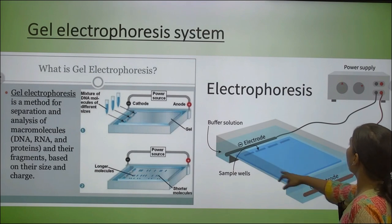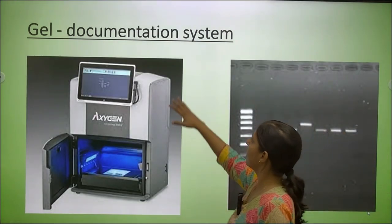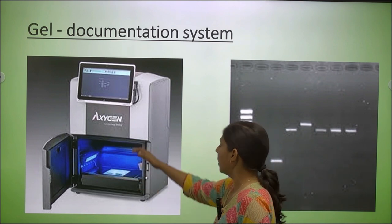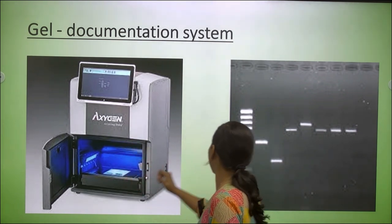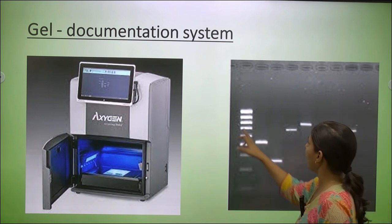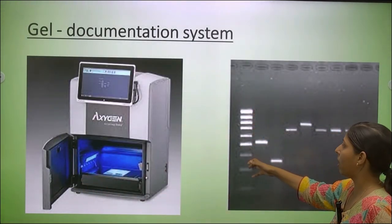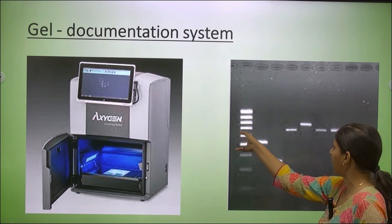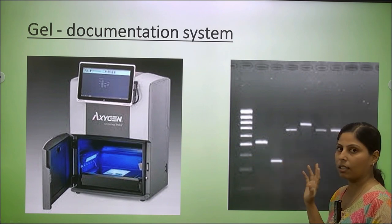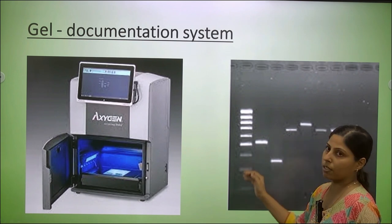Samples are loaded into wells and the electrodes run negative to positive with applied power supply. Shorter molecules move faster and larger molecules stay behind. This is the basic representation of the gel electrophoresis unit. The gel documentation unit — provided by companies such as Syngene, Geni, HiMedia, and Bio-Rad — uses UV light on the DNA to visualize the gel picture. A DNA ladder or marker serves as a reference. For example, if the marker shows 500 bp, we can determine that a band between 500 to 600 bp, or shorter fragments around 100 bp, can be identified by comparing with the reference ladder.